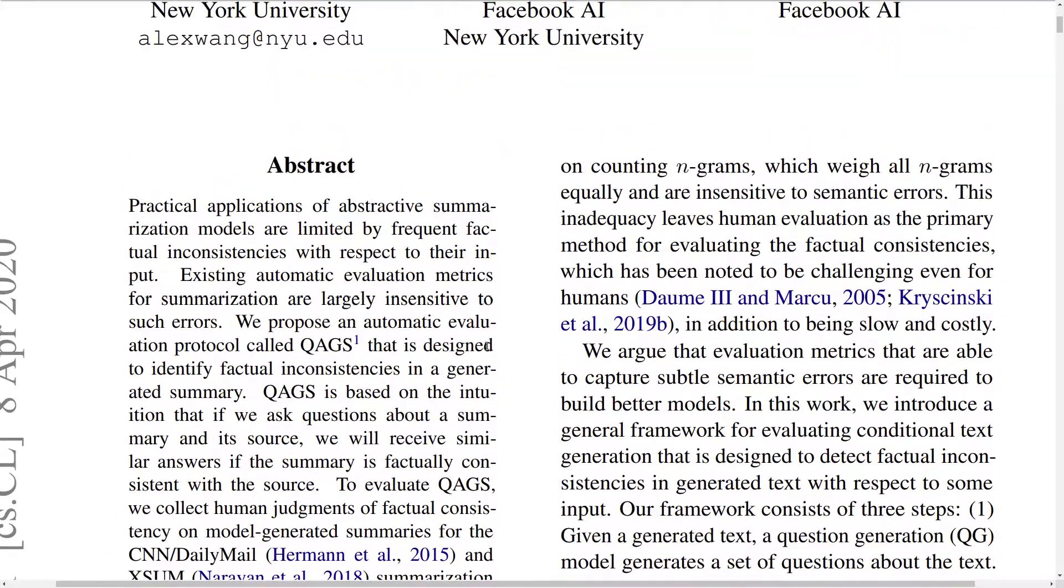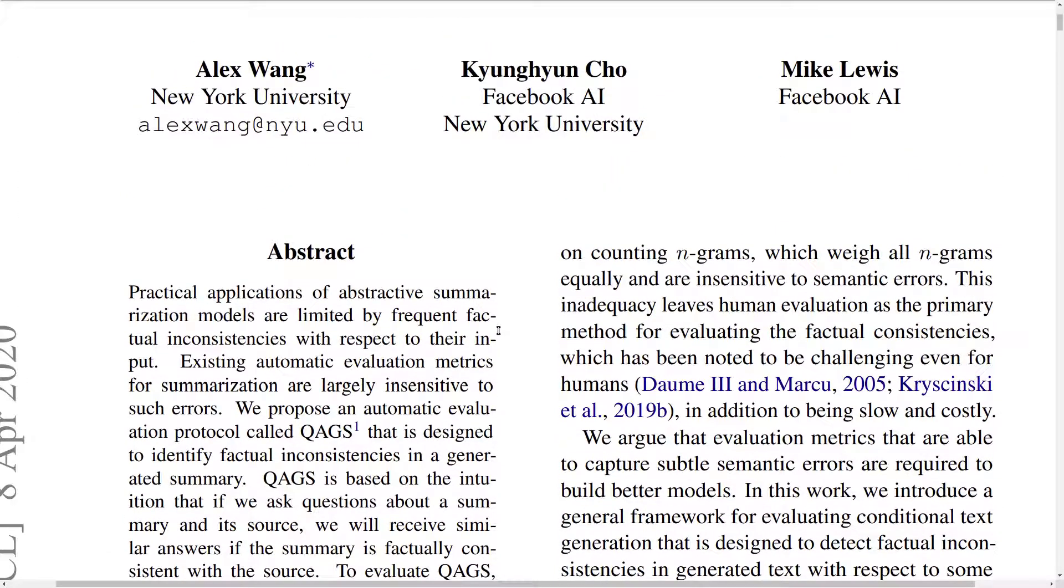ROUGE is based on n-gram overlap between the system-generated summary and ground truth summaries written by humans. There you have an obvious limitation. Let's say you have one summary sentence like 'the weather is very good today'.